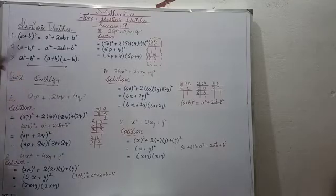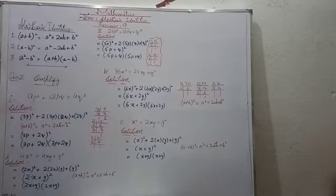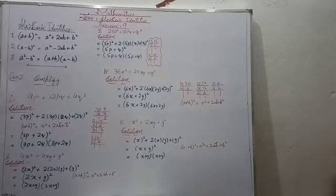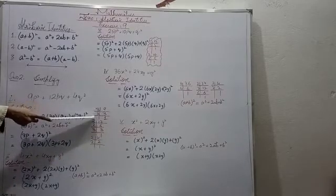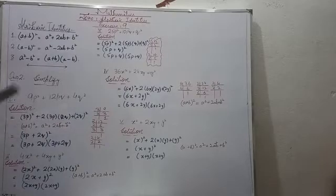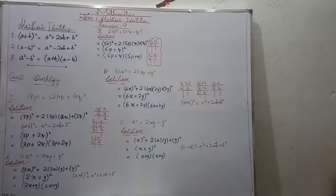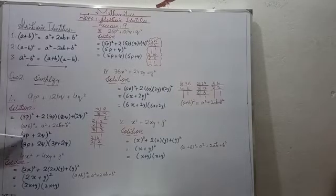For 9p² + 12pq + 4q², first find the factors of 9, 12, and 4. For 9, using LCM: 3 times 3 equals 9, so 3 appears 2 times. Therefore, you have 3², and with p² already there, you get (3p)².